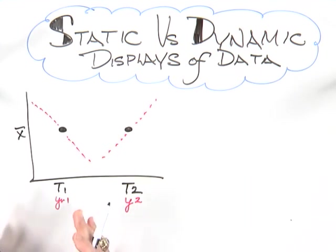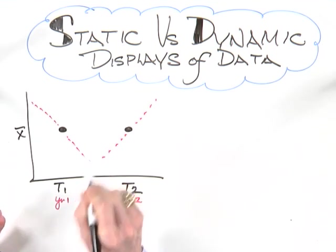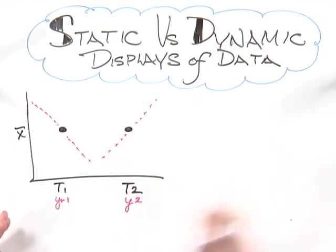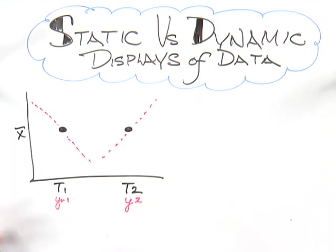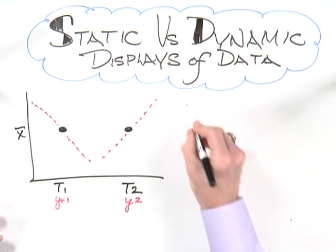This happens every time you have static displays of data. You have to ask yourself: does the statistic — mean, median, mode, standard deviation — really reflect the variation that lives in the data?